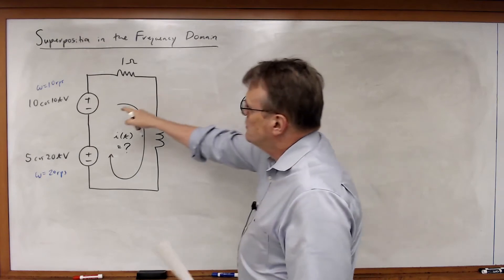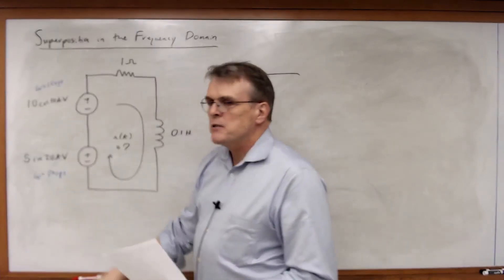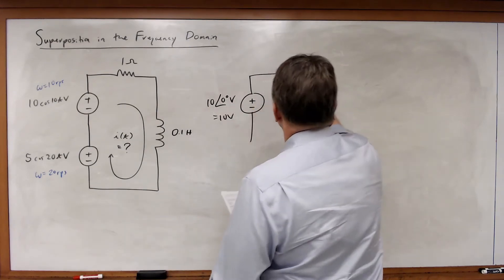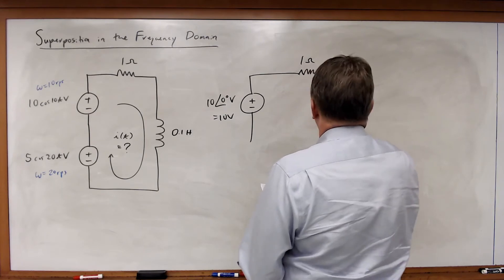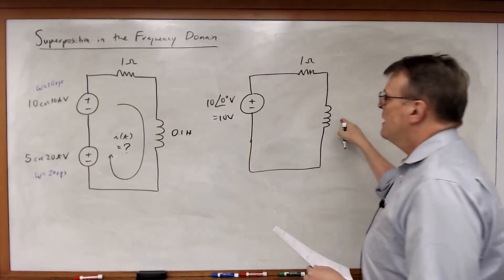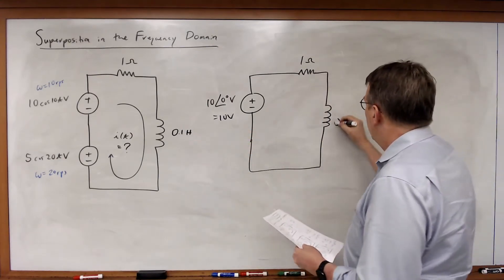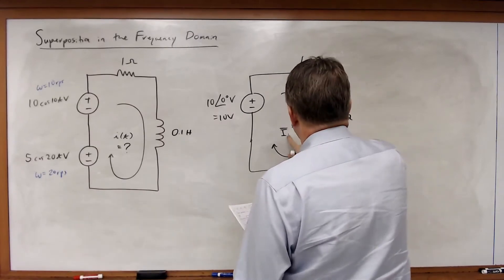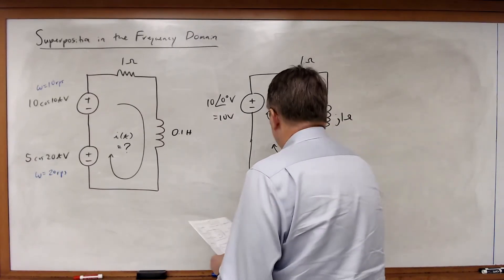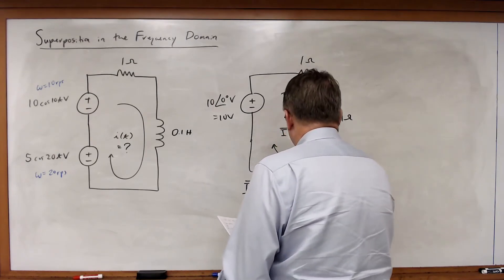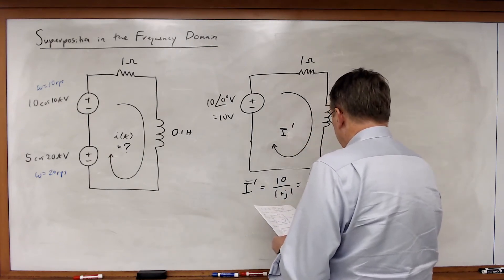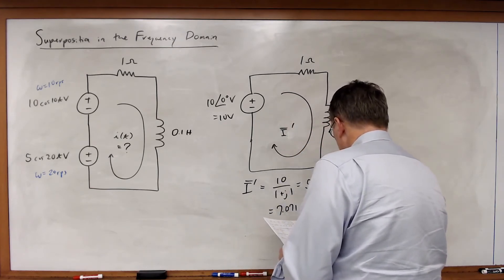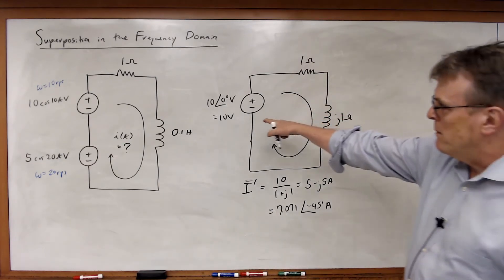For the first problem, I zero out the bottom source and assume omega equals 10 radians per second. The source becomes 10 at a phase angle of zero volts, the resistance is 1 ohm, and J·omega·L equals J1 ohm. So I prime equals 10 divided by (1 plus J1), which equals 5 minus J5 amps, or 7.071 at a phase angle of minus 45 degrees amps. That's the first partial solution due to the top source.